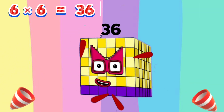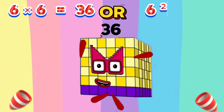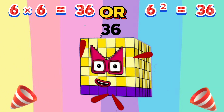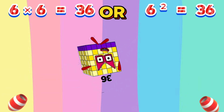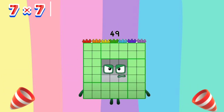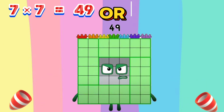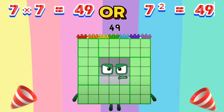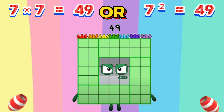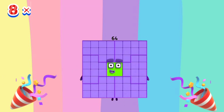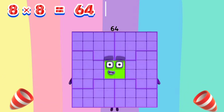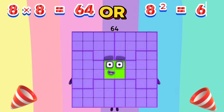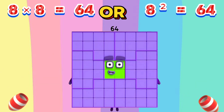Six times six equals thirty-six, or six squared equals thirty-six. Seven times seven equals forty-nine, or seven squared equals forty-nine. Eight times eight equals sixty-four, or eight squared equals sixty-four.